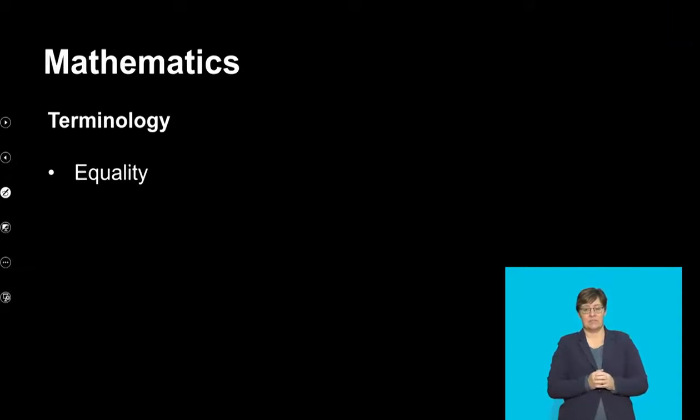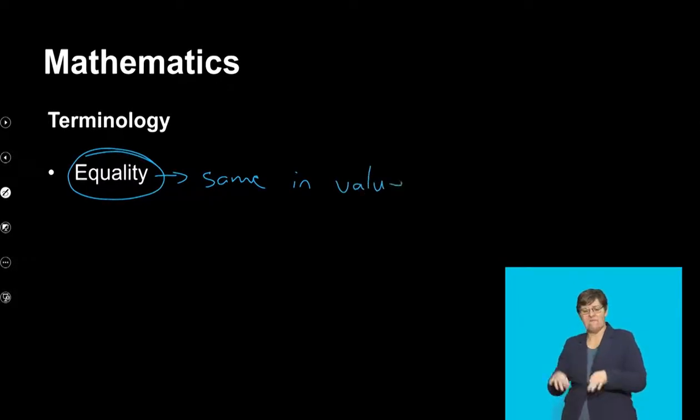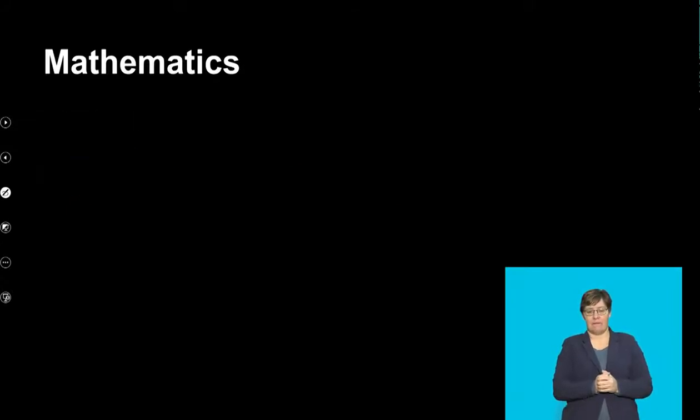Before we can even talk about the deductive reasoning, because this is going to be coming up a lot of times, we need to first talk about what equality is. Equality would simply mean that things are same in value. It can be an angle, it can be a distance, it can be a length. As long as one thing is equal to something else, meaning it is the same value as something else, that's what we're going to be talking about.